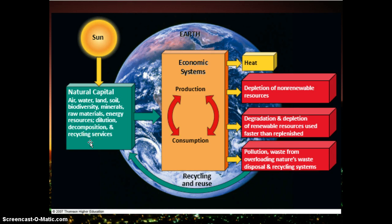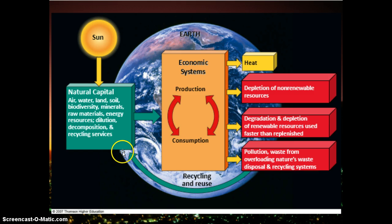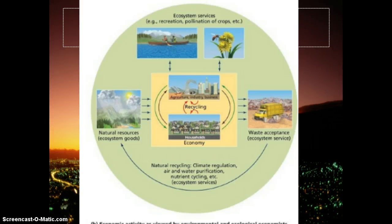Natural capital is another term for all the resources that come from nature — all the different goods and services. We go into that production-consumption loop and have sinks where waste products come out. Waste can look like a lot of different things. There is always an option that some waste might be recycled or reused, which we want to do as much as possible, and in that case it would cycle back to the natural capital again.